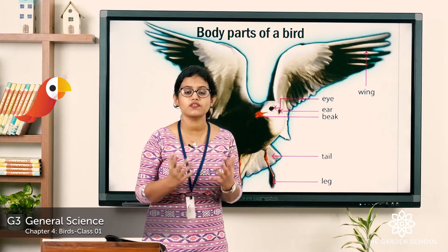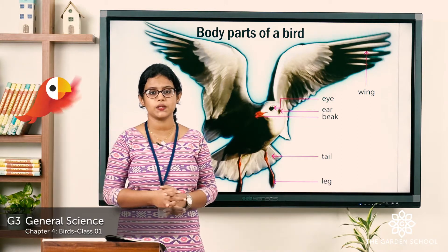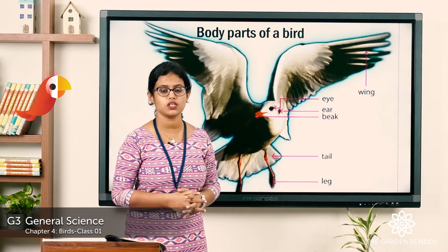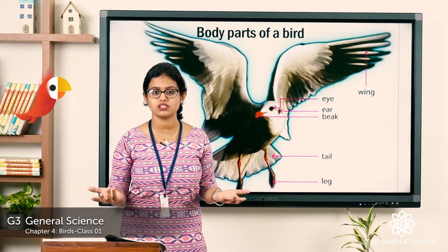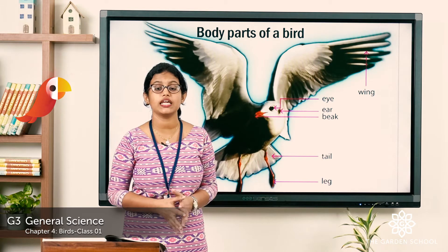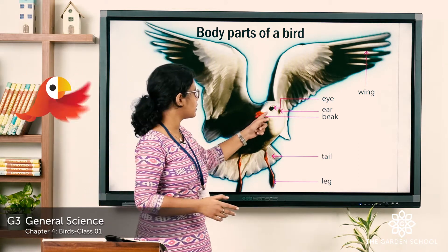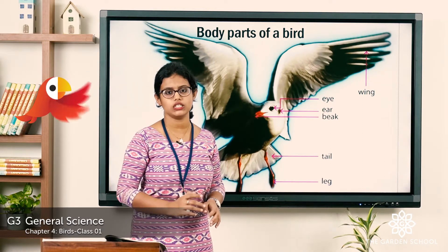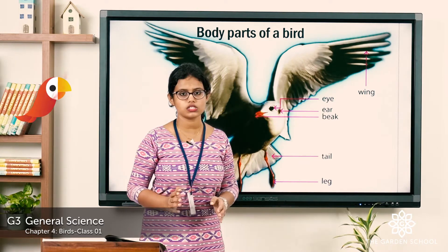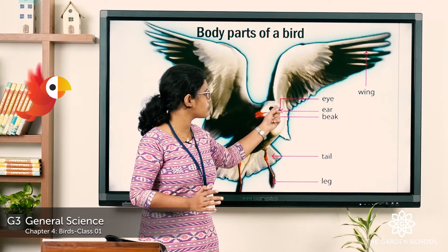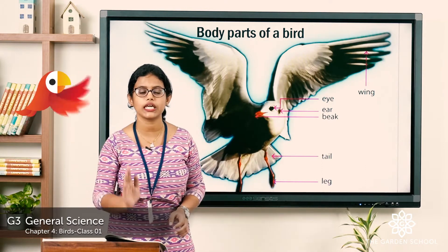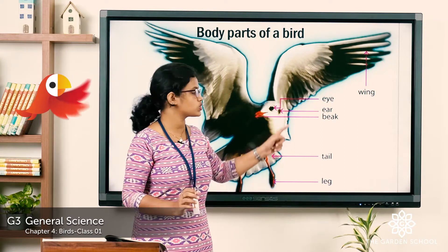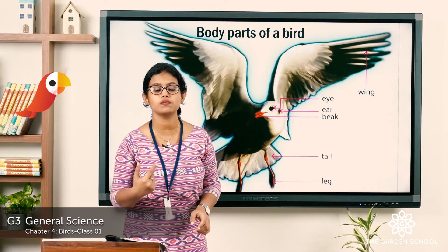Birds have two eyes. You know the function of eyes — they help us to see around the world. You may think: why don't these birds have ears? They don't have external ears like human beings or other animals, but they do have ears. They have tiny spots covered within skin present behind their eyes, through which they hear.